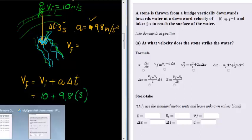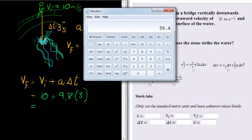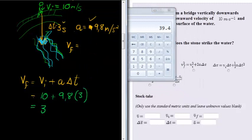With all that considered, let's use our calculator. And we find 10 plus 9.8 times 3 and we get 39.4 meters per second.